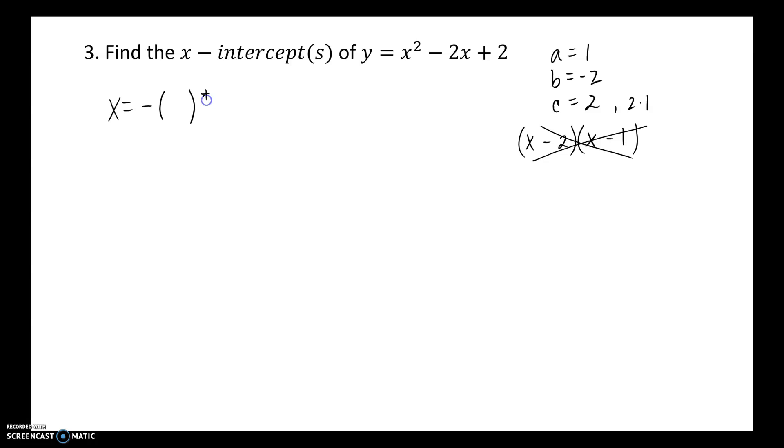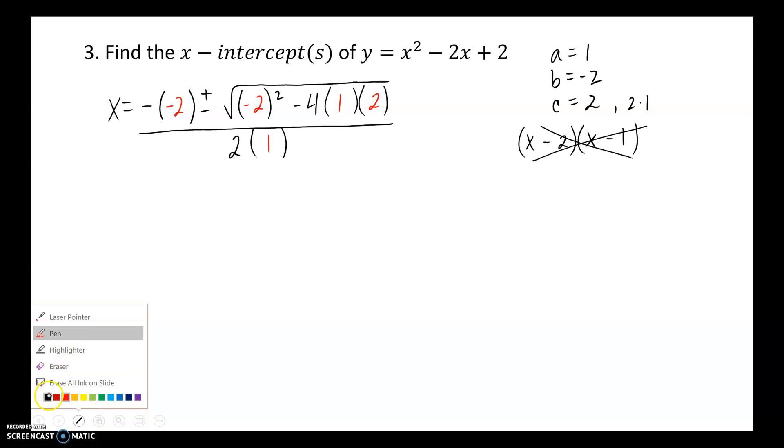Opposite of b plus or minus the square root of b² minus 4 times a times c, all divided by 2a. So opposite of b, b squared, 4ac, all over 2a. All right, so I filled out the form of the quadratic. Then I plugged in all the numbers. So opposite of negative 2 is positive 2. Negative 2 squared is positive 4. 4 times 1 is 4, times 2 is 8, all divided by 2. 4 minus 8 gives me a negative 4, divided by 2.